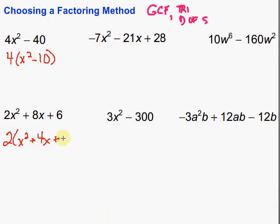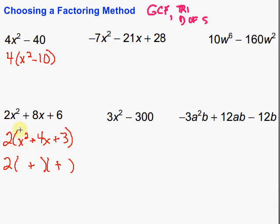Now I have a trinomial, so I use my trinomial factoring skills. Is it a perfect square trinomial? No, because 3 is not a perfect square. But I'm looking for factors of 3 that add up to 4 — that would be 3 and 1. Remember to keep that 2 out front. The trinomial breaks into two binomials: 2 times (x plus 3)(x plus 1). Both signs are plus. I look at the result — there's no further factoring, so we're done.